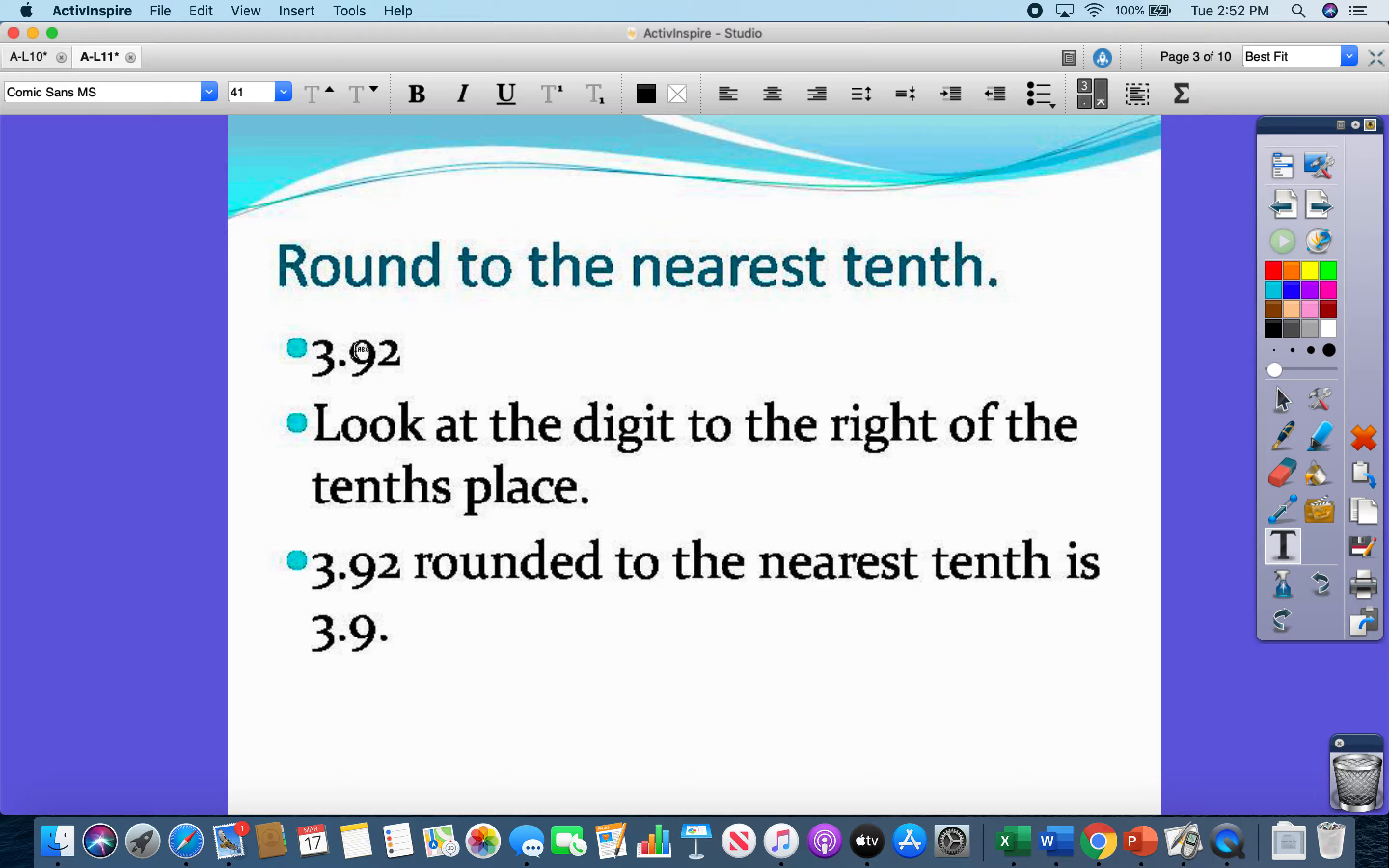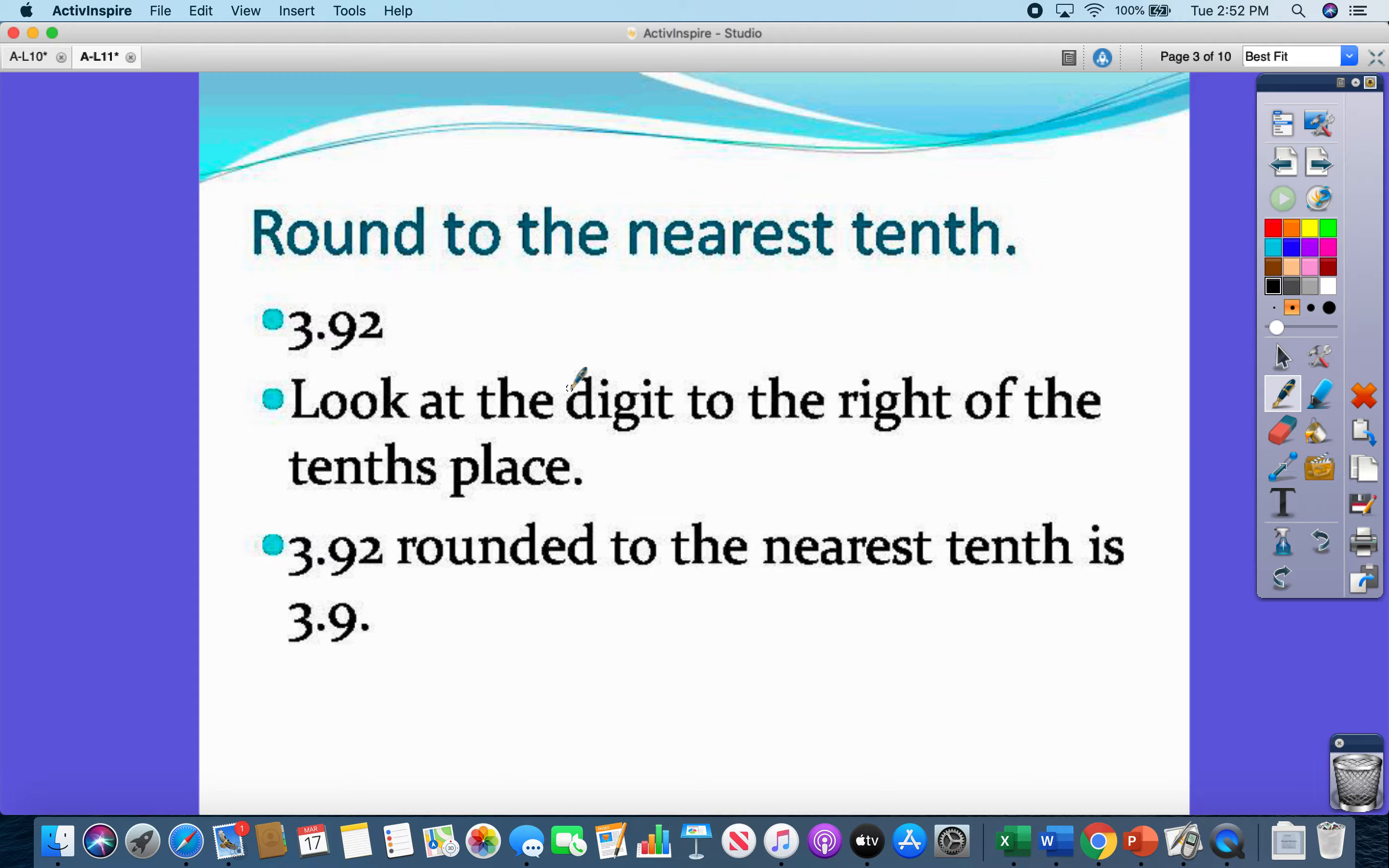We need to take 3 and 92 hundredths and round to the nearest tenth. Okay, so look at the digit to the right of the tenths place. All right, so first thing I got to do is where is the tenths place? This is the tenths place. The nine is.